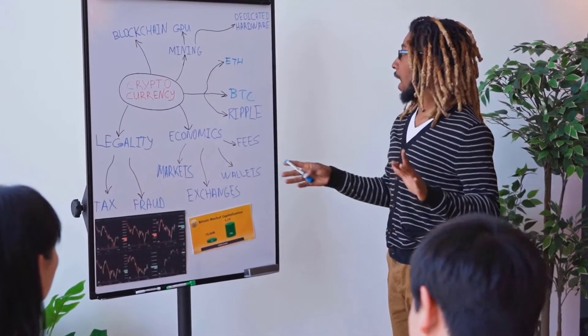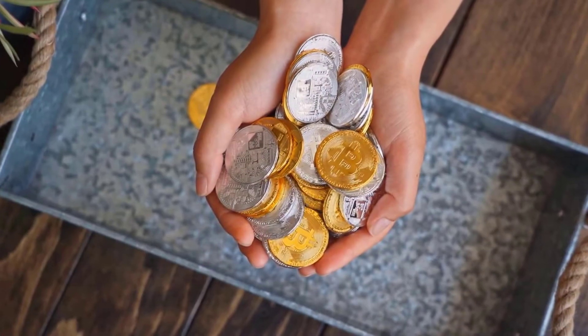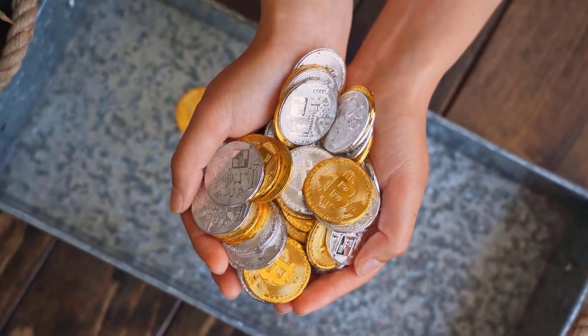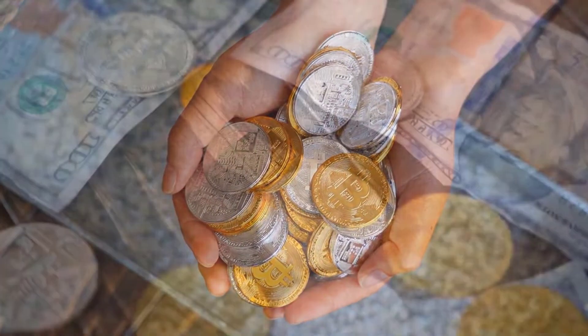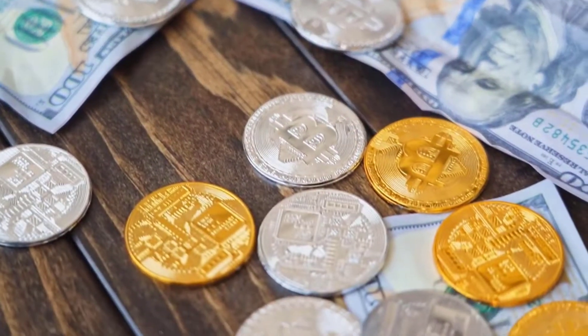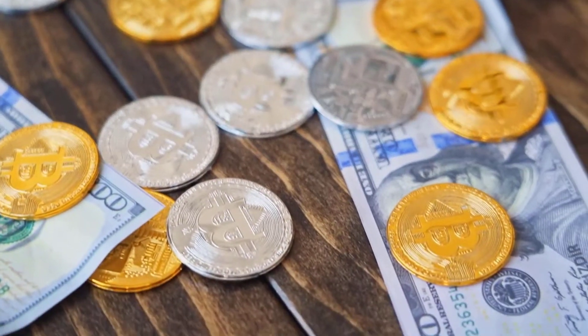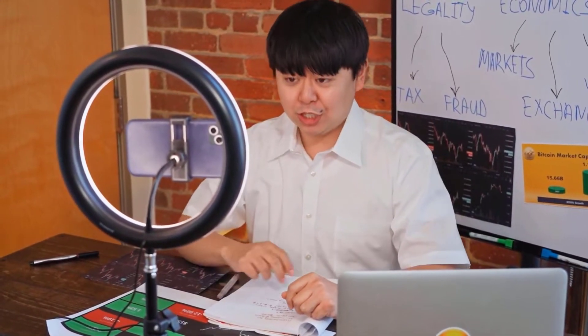As of now, Elrond is in the scope of $48.71. On the off chance that the example proceeds, the cost of EGLD could arrive at opposition levels of $49.16 and $54.72. In the event that the pattern switches, the cost of EGLD might tumble to $47.33 and $45.58.